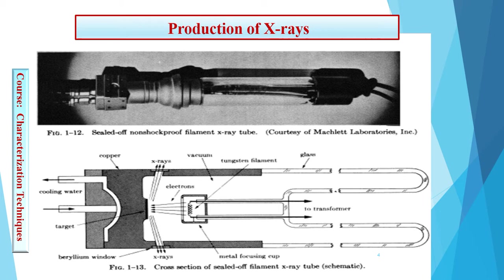This is the diagram of the evacuated tube. Here you can see the anode, where the target material or copper is placed. The filament is at a very high negative potential, and due to this high negative potential, thermionic emission of electrons takes place. You can also see the water cooling around the anode, which maintains its temperature and prevents the copper from melting. When the high-energy electron beam falls on the target, X-rays are emitted and travel towards the beryllium windows, which are 100% transparent to X-rays. These X-rays can be used for the investigation of crystal structure.